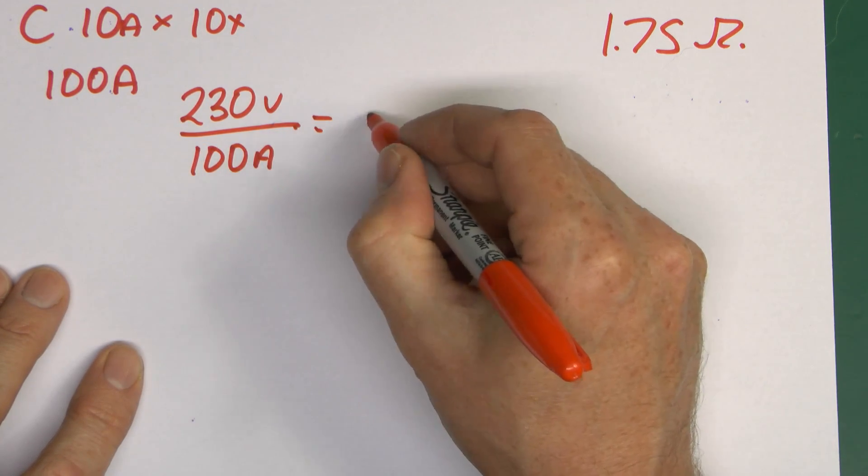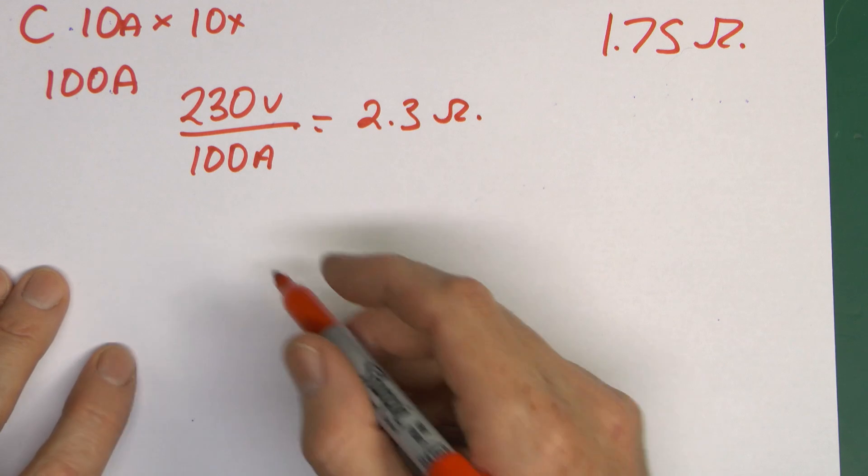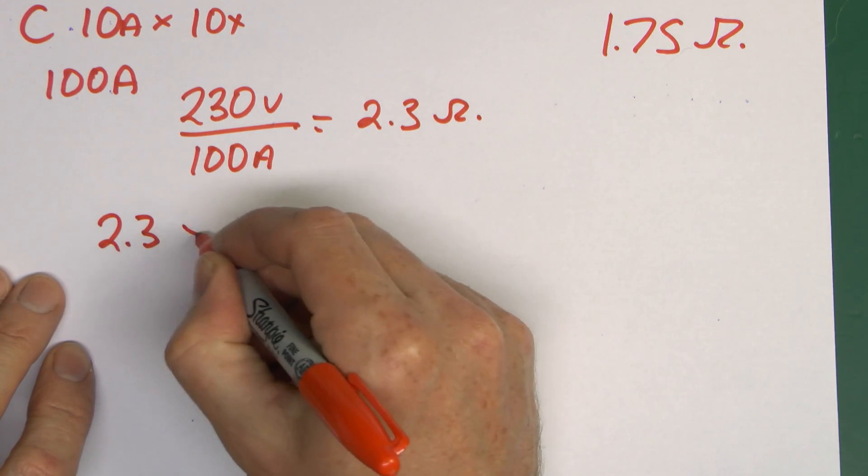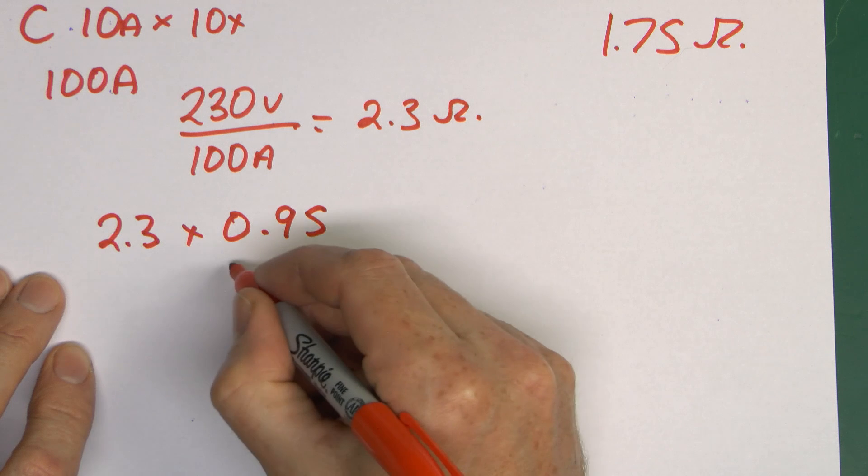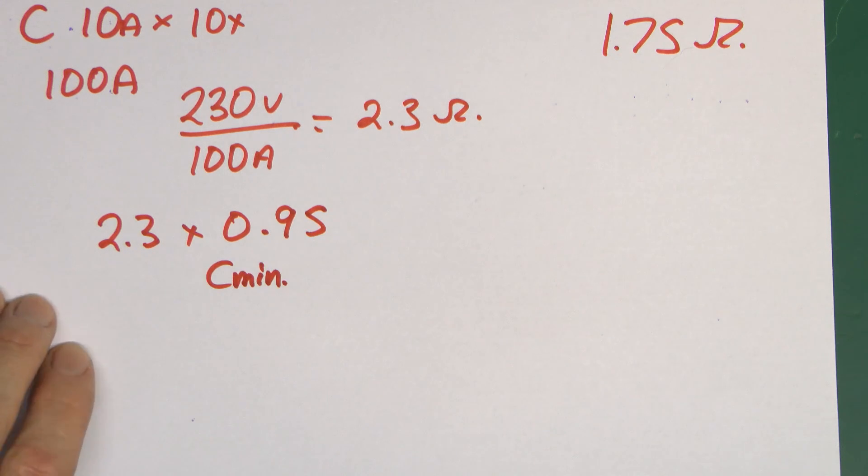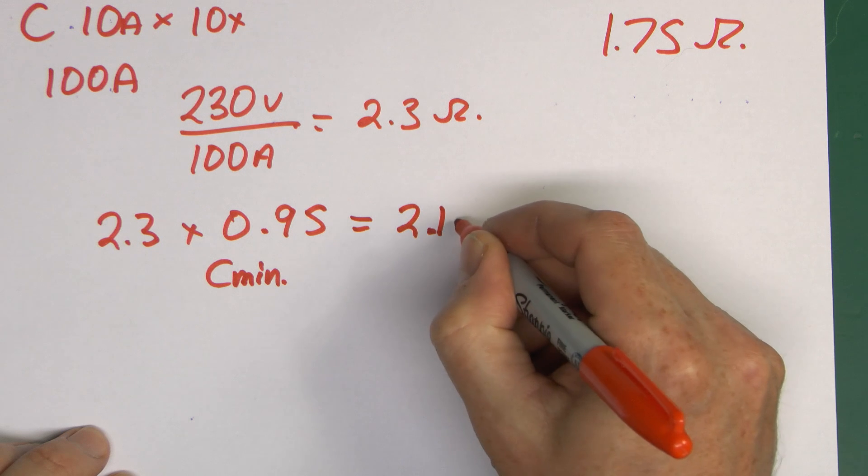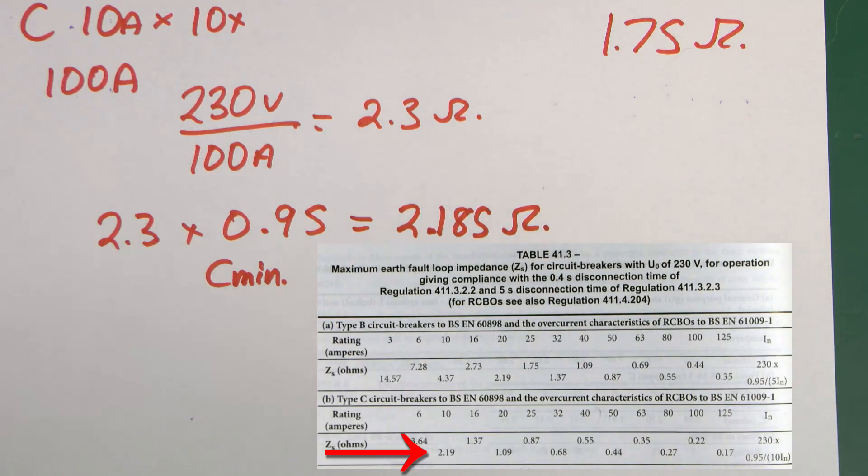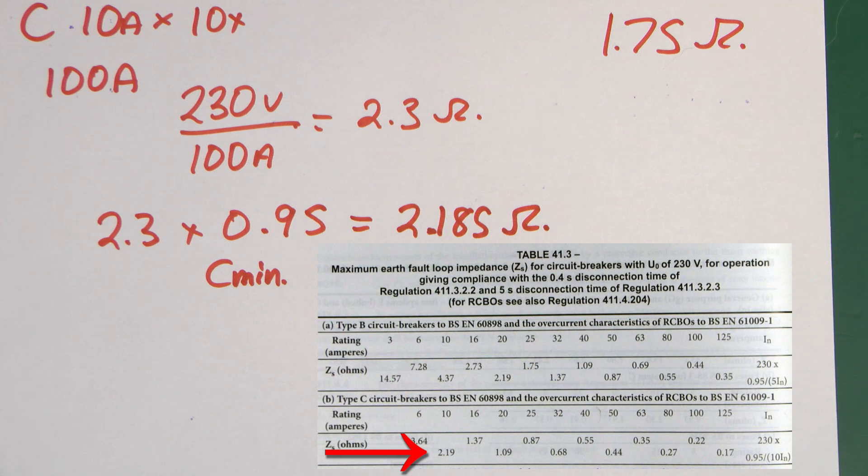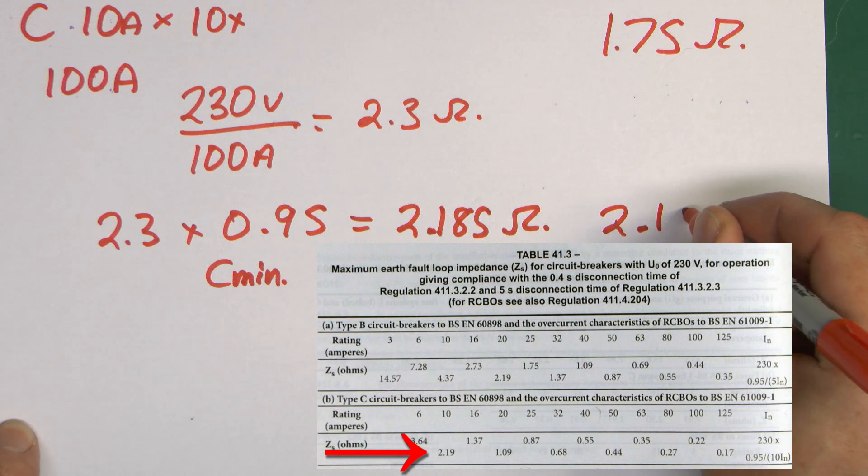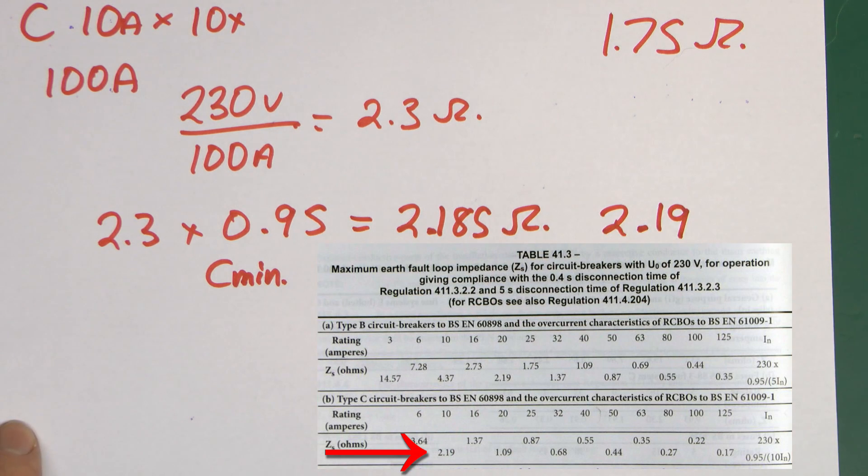And again, the voltage in the UK is of course 230V, so 230V divided by 100A. That will give us a value of 2.3 Ohms. Again, as we had before, there is that correction factor we need to apply, so then it will be 2.3 multiplied by 0.95. So remember that was that Cmin, to account for the possibility that the voltage could be lower than 230. And if we just calculate that one out, we get 2.185. And if we have a look in that table 41.3 in the BS7671, that's basically the value we get there. They've actually got it in there at 2.19. So again, just rounding up to the nearest two digits there.